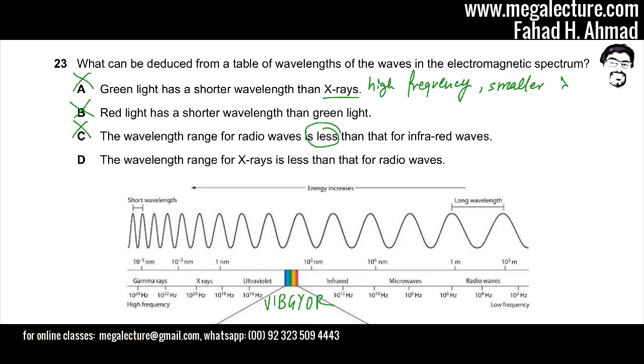That would leave us with option D, which is that the wavelength for X-rays is less than that for radio waves. Which is true—the wavelength for X-rays are over here at the high frequency end. So high frequency end, that means a smaller wavelength.